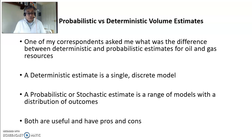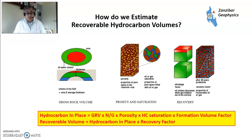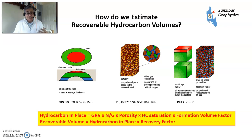They're both useful and they both have pros and cons. Briefly, the volumetric equation: hydrocarbon in place is the gross rock volume multiplied by the net to gross — the proportion of rock that can contain hydrocarbons — multiplied by the porosity, the holes in the rock, multiplied by the saturation, because the holes are not entirely full of hydrocarbon; they have some water in them as well. Then the formation volume factor, because gas expands and oil shrinks when brought to surface. That gives you the hydrocarbon in place, but you're never going to get all of it out, so you apply a recovery factor.